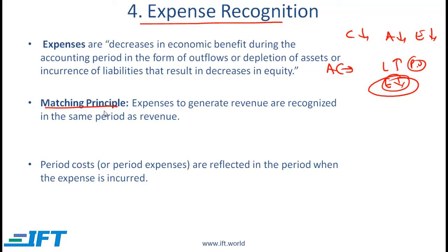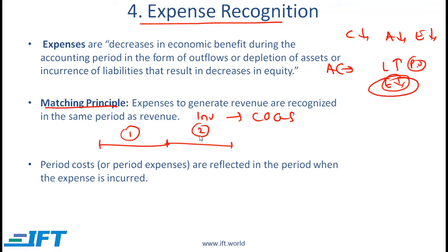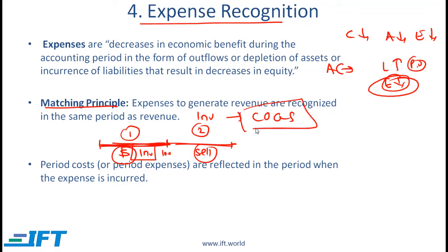Matching principle. The matching principle states that expenses to generate revenue are recognized in the same period as revenue. The classic example of this is with inventory and cost of goods sold. Let's say that you purchase inventory in period 1, but that inventory is sold in period 2. In period 1, where you actually spend money to buy the inventory, the money spent is not shown as an expense — it is shown as an asset on the balance sheet called inventory. So if you spent 100 on inventory in period 1, you create an asset called inventory worth 100. In period 2, where you actually sell that inventory, the expense is realized in the form of cost of goods sold.